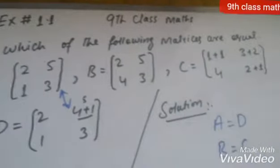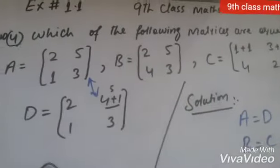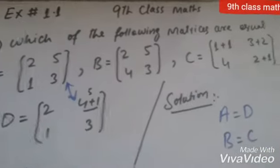Now, which matrices are equal: matrix A and matrix D are equal, and matrix B and matrix C.